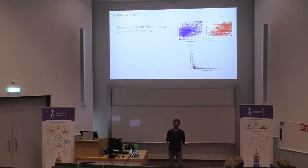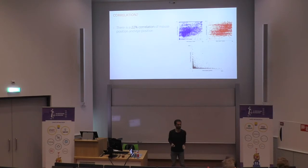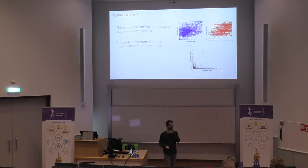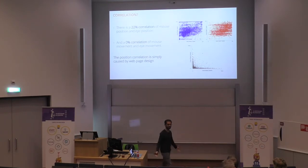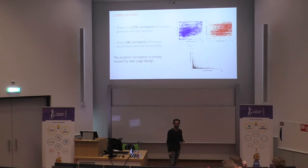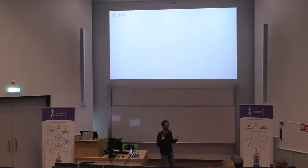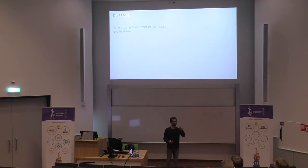22% — I thought, data is data. But then we looked: shouldn't that mean, if they were nicely related, that when my eye moves the mouse should move too? That was not true. The positional correlation exists just because of web page design, and that's it — which was a little devastating. What about the distance? How often is the cursor in the field of eye fixation? It's one degree. The largest distance possible was 32 centimeters — the screen size. The red line is one degree, the green line doubles it to two degrees. Only 3.5% of the time the mouse is actually in the field of view when you fixate — or 10% if you're not too stingy.